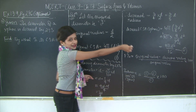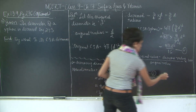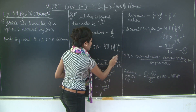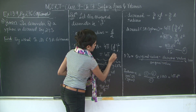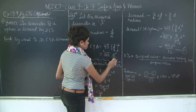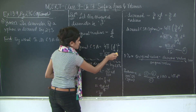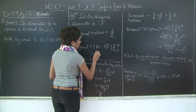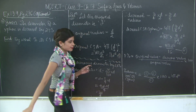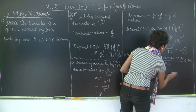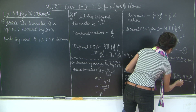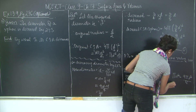Let's substitute the values. Equation 1 is 4π(d/2)², which is 4πd²/4. The 4s cancel, giving πd². So let's rewrite equation 1 as πd². Now the percent decrease becomes: πd² minus 9πd²/16, all divided by πd², into 100.